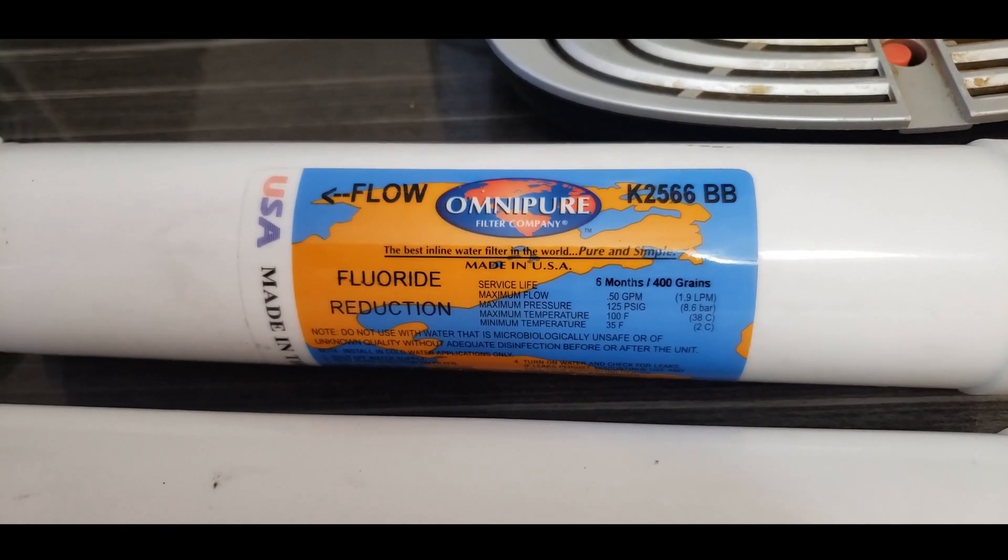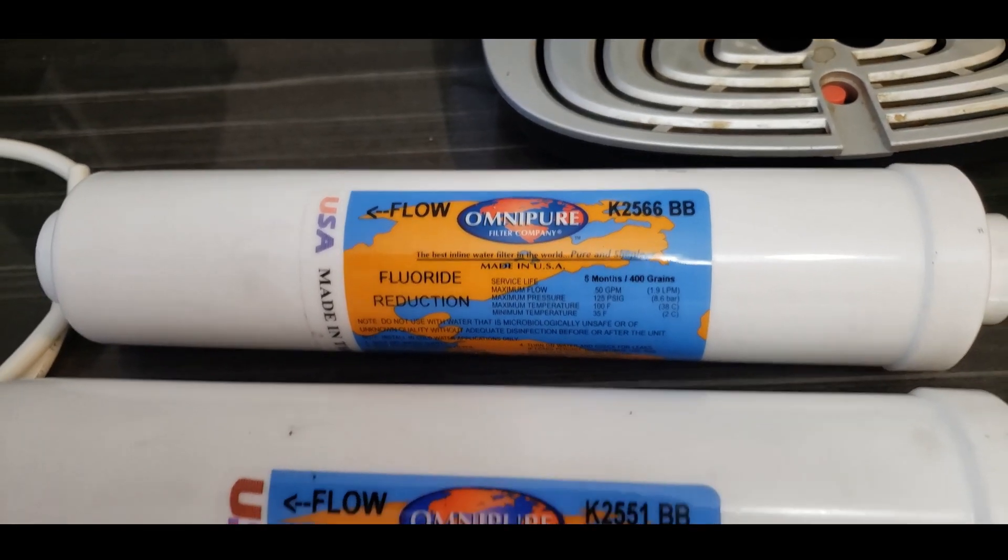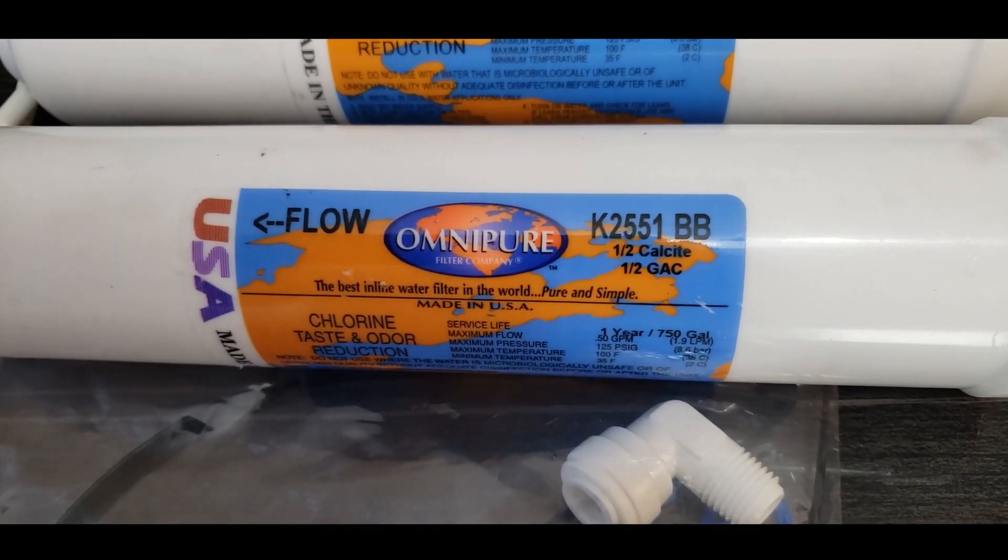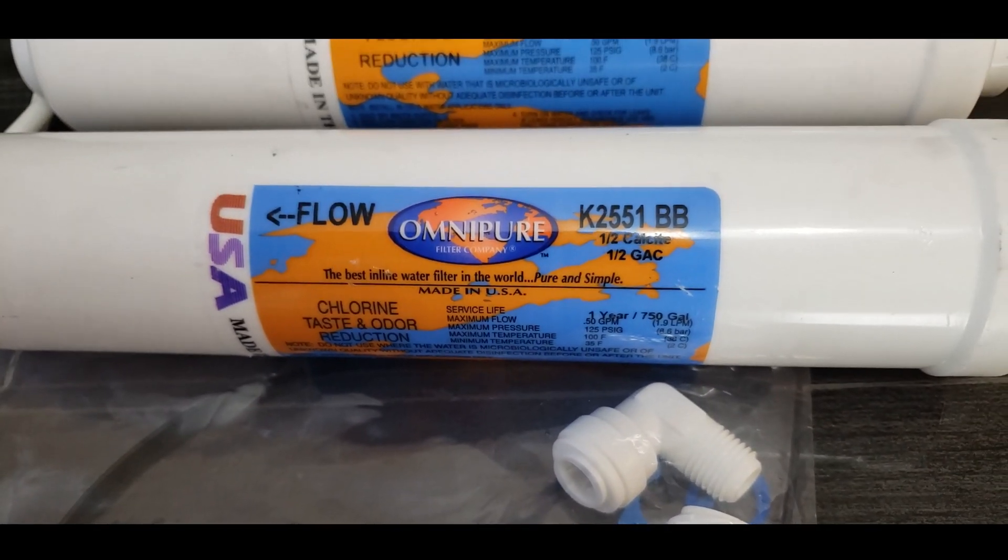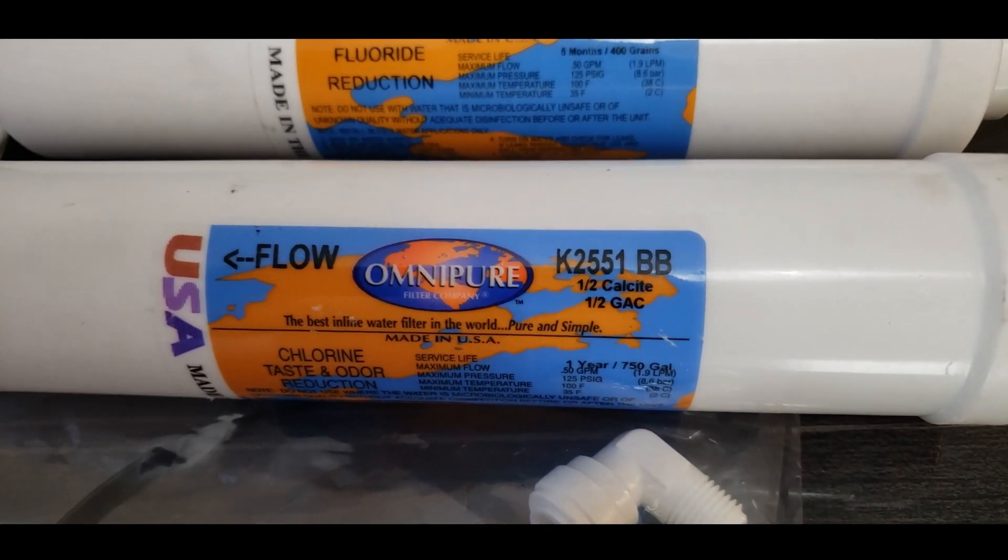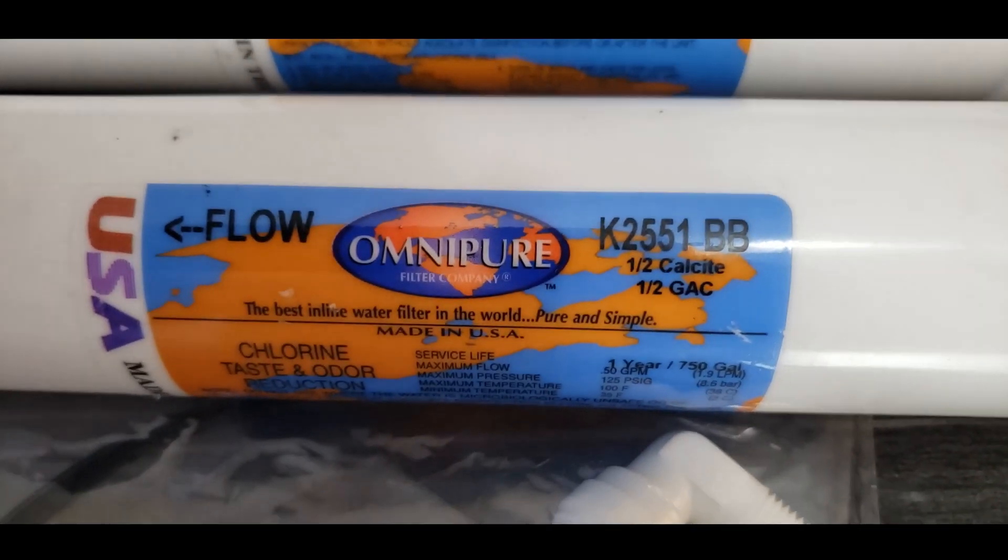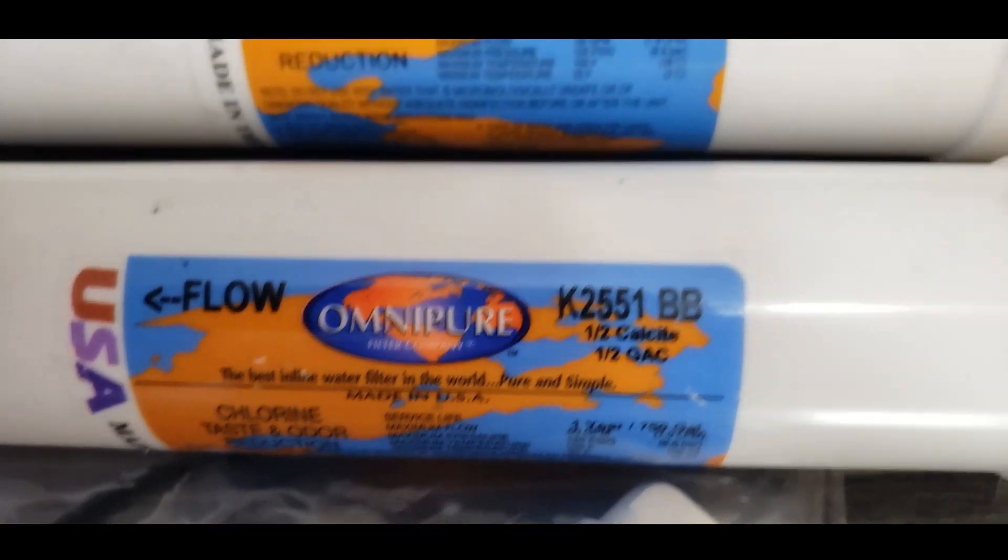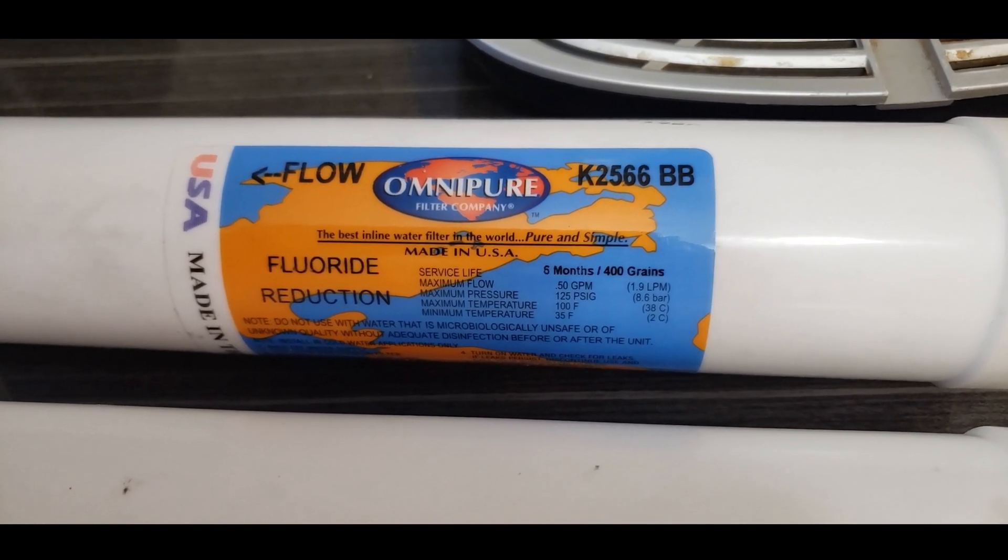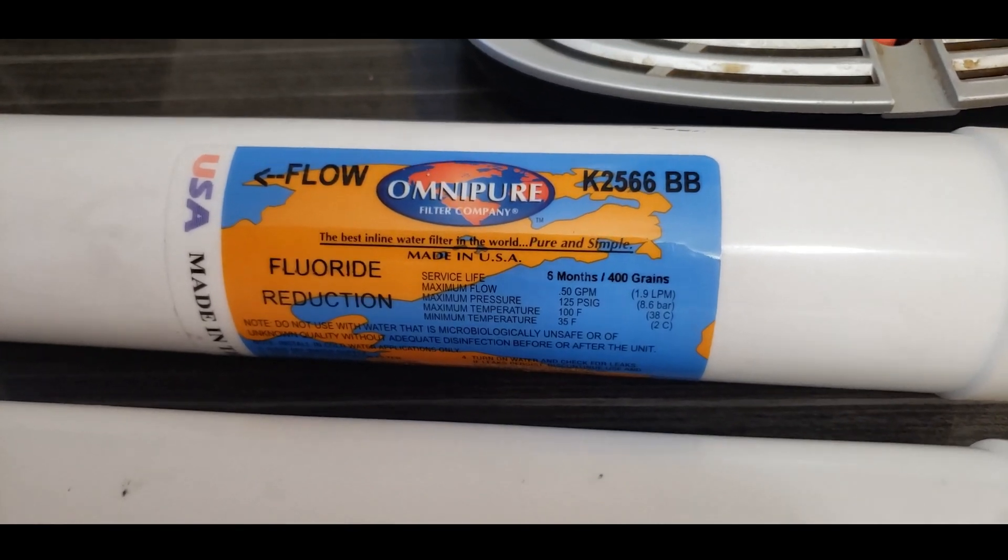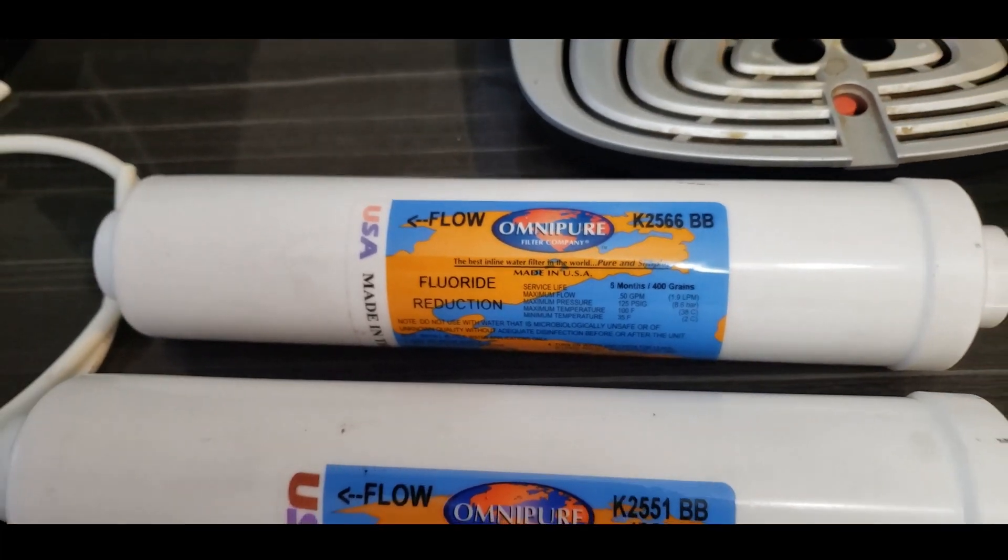This filter is to remove added fluoride to your water and the other one is basically half calcite, half GSC. Even though it says chlorine reduction, it's actually a remineralizer for me here in Vancouver. If you need to remove added fluoride like those in GTA, Greater Toronto region area water, then you need this one here.